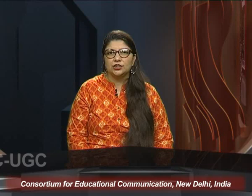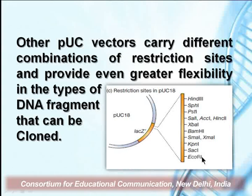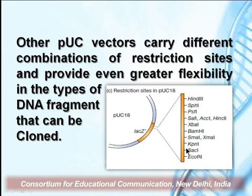Other PUC vectors carry different combinations of restriction sites for even greater flexibility. For example, PUC 18 and PUC 19 are the most commonly used cloning vectors derived from E. coli plasmids — the only difference being that in PUC 19 the orientation of the polylinker is reversed. The lacZ gene has more restriction sites introduced, allowing a large number of diverse fragments digested with different restriction enzymes to be inserted. It is a small plasmid that can carry up to 5–10 kb of insert DNA.